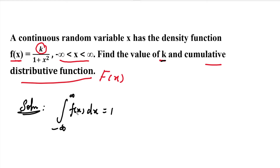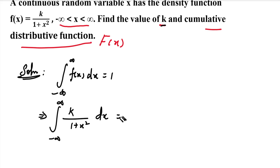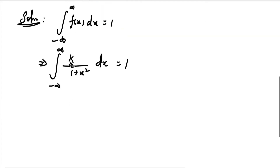Now we can substitute the f(x) value. We can find the k value. Starting from minus infinity to plus infinity, the function is k divided by 1 plus x squared. Let's substitute this in place of f(x). So the integral from minus infinity to plus infinity of k divided by (1 plus x squared) dx equals 1. Since k is a constant, we take it outside the integral.